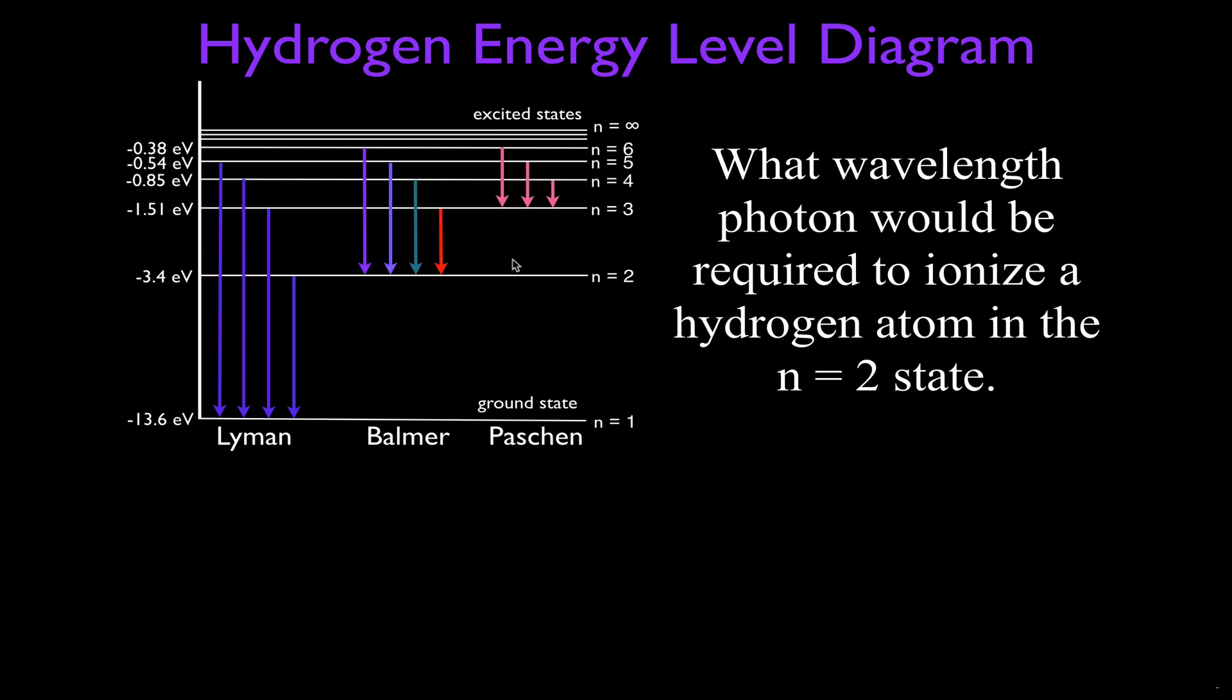So we have -3.4 electron volts, which means we need to add 3.4 electron volts, which means the photon needs to have an energy of 3.4 electron volts in order to ionize, which is to completely remove that electron from that hydrogen atom, so it has no energy relative to the hydrogen atom.